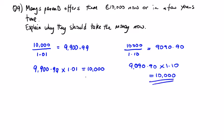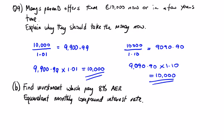So it makes a lot of sense to take the money now rather than waiting for a few years time. They actually find an investment which pays 8% per annum, which is really good. What's the equivalent monthly compound interest rate?